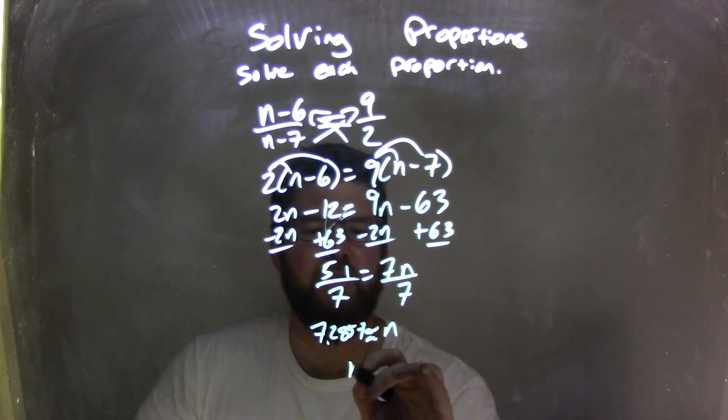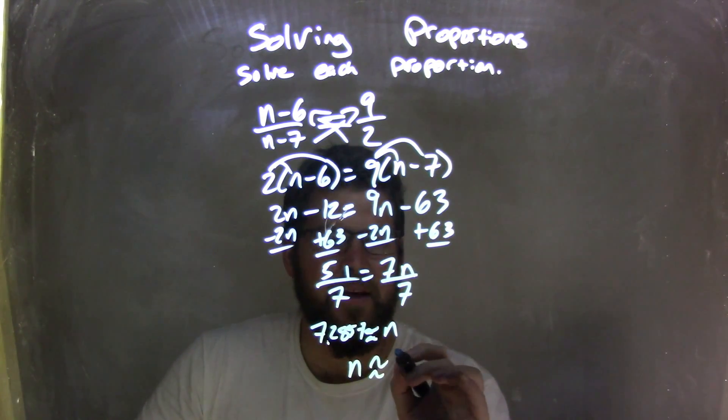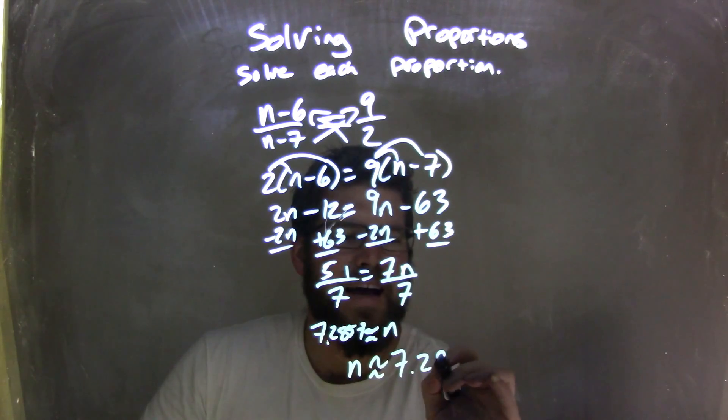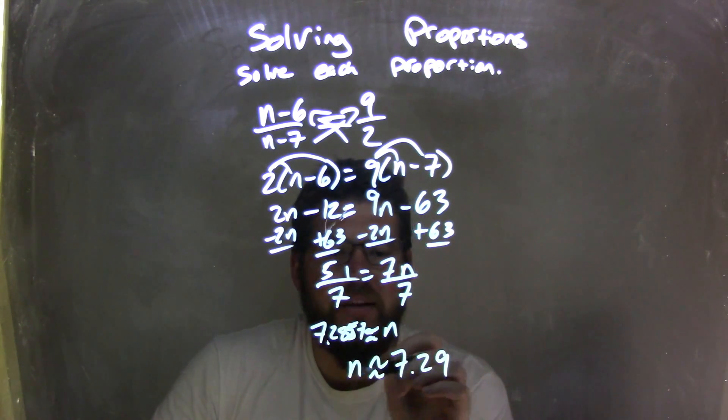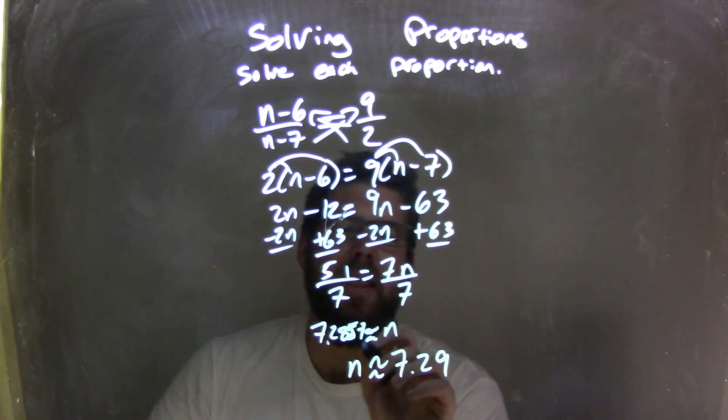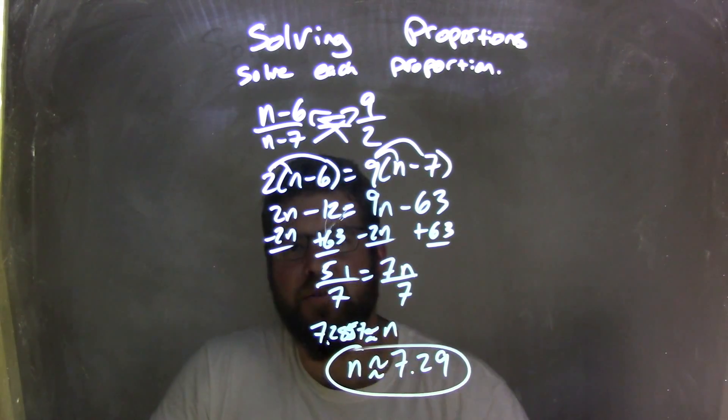So if I round and put n first, n is approximately 7.29. Okay, rounding from 7.285, that's a 5 there, rounded out to n is approximately 7.29. And that is my final answer.